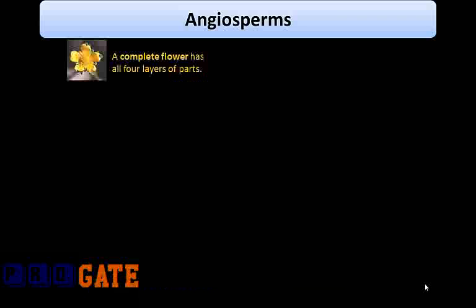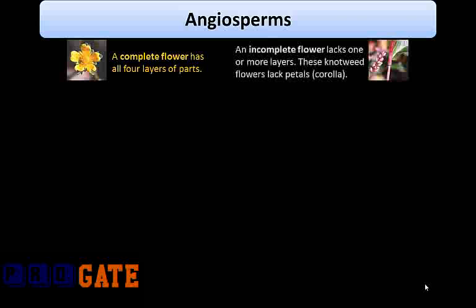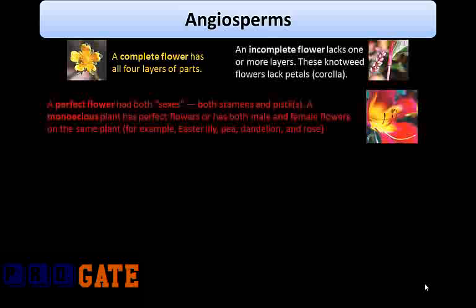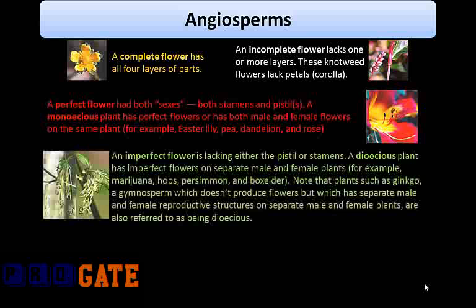Botanists group species of plants based on a number of characteristics, paying particular attention to how the flowers are put together. A complete flower has all four whorls of parts; an incomplete flower lacks one or more whorls. A perfect flower has both sexes — both stamens and pistils. A monoecious plant has perfect flowers or has both male and female flowers on the same plant — for example, Easter lily, pea, dandelion, and rose. An imperfect flower lacks either the pistil or stamens. A dioecious plant has imperfect flowers on separate male and female plants — for example, hops, boxelder, and persimmon.